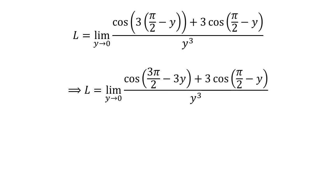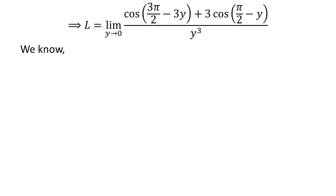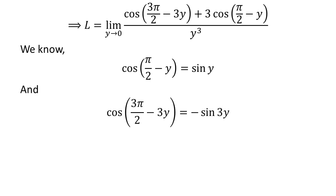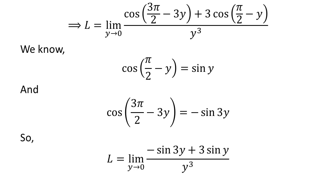Here I have taken off the brackets in the numerator. We know cosine of (π/2 minus y) is equal to sine of y. The verification of this trigonometric identity has been explained in the video appearing in the upper right corner. The link is also given in the description. Applying the above identities gives us: L is equal to the limit of minus sin(3y) plus 3 times sin(y) upon cube of y as y approaches 0.